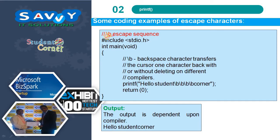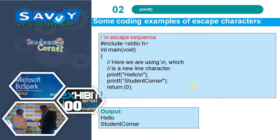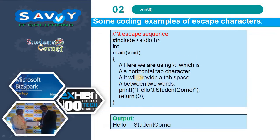For \b, the backspace character moves the cursor back. In the example, printing hello followed by \b applied 4 times — the output is dependent upon the compiler and it prints accordingly. For \n, it gives a new line. Here, using \n after hello causes the next output to print on a new line.